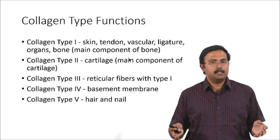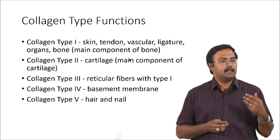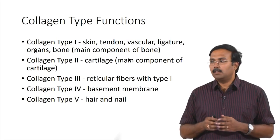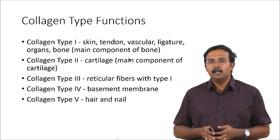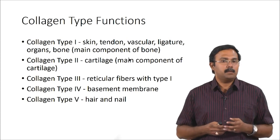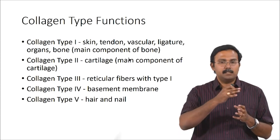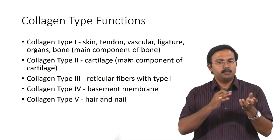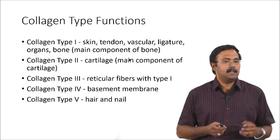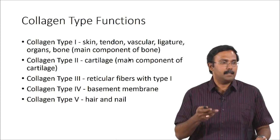There are 28 different types of collagen fibrils. Type 1 collagen is seen in skin, tendon, vascular ligature, organs, and bones. Type 2 collagen is mainly seen in cartilage. Type 3 collagen is seen in reticular fibers along with type 1. Type 4 is seen in the basement membrane — which separates the tissue from the matrix. Type 5 is seen in hair and nails. They have significantly different physical and mechanical properties and are found in different tissues.